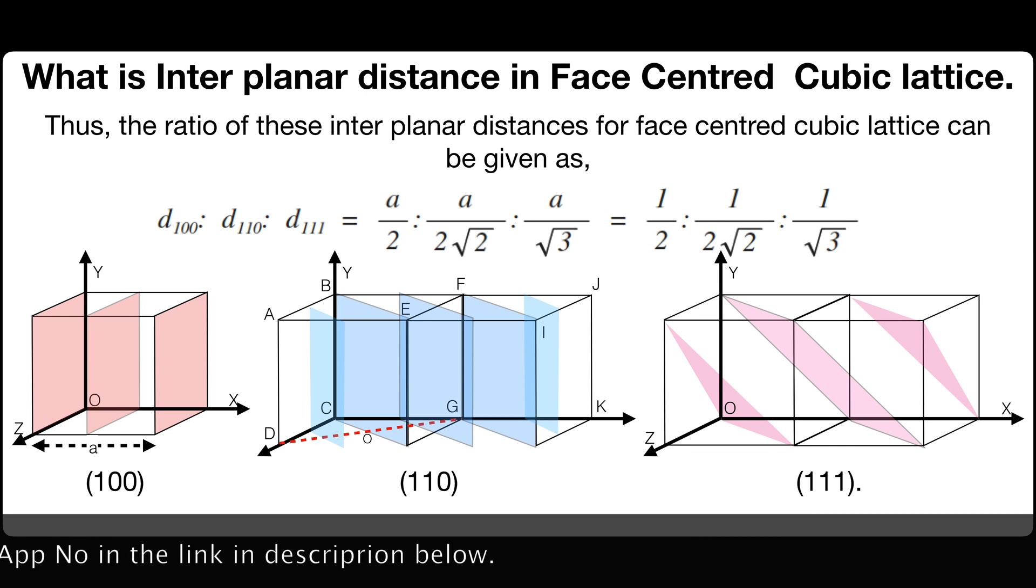That equals 1 by 2 to 1 by 2 square root of 2 to 1 by square root of 3.